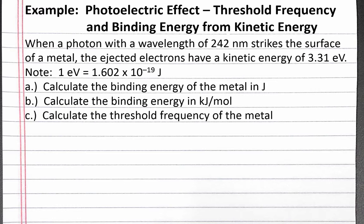Part A: calculate the binding energy of the metal in joules. Part B: calculate the binding energy in kilojoules per mole. Part C: calculate the threshold frequency of the metal.